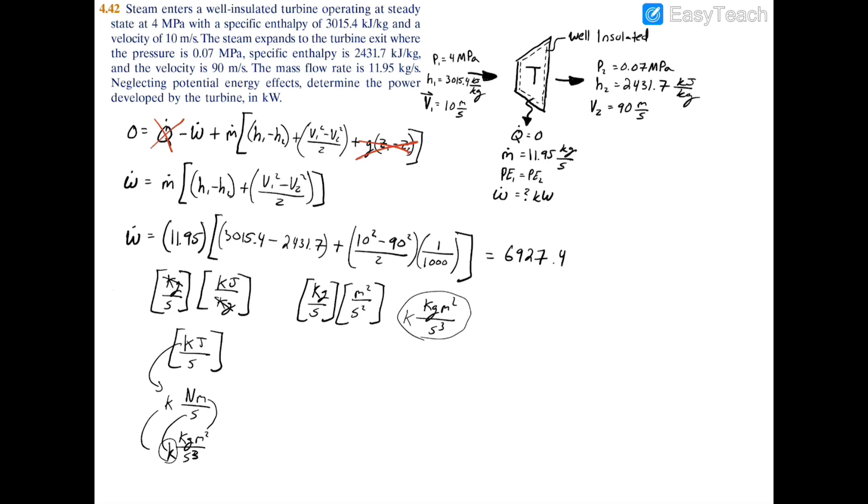And then when you multiply across, you will in fact have a kilojoule per second or a kilowatt. So we have 6927.4 kilowatts.